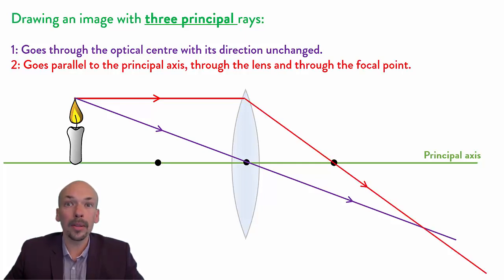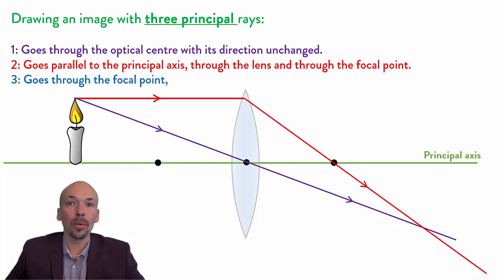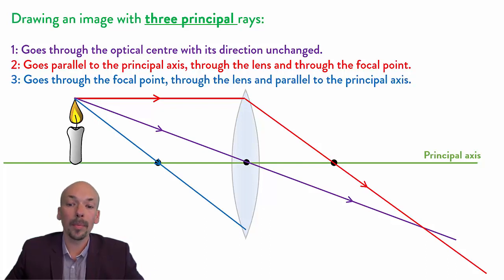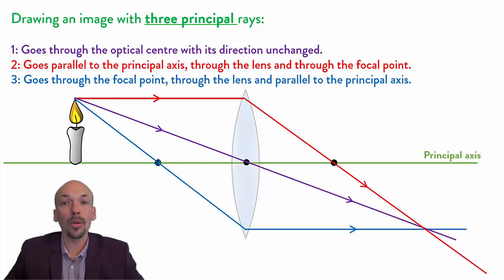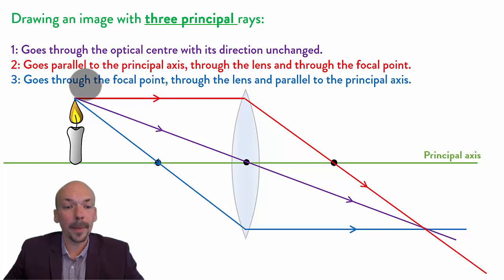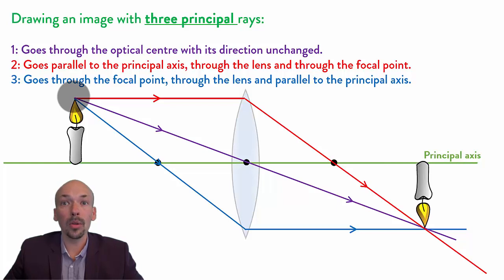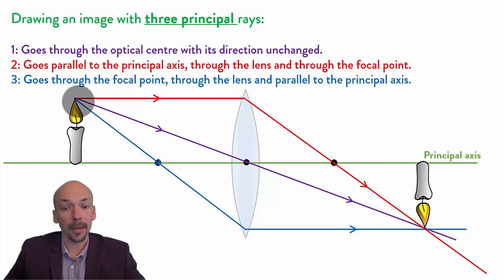As you can see the two will intersect. Now the third one — this one will go through the focal point, through the lens, and then parallel to the principal axis. As you can see, all three lines intersect at exactly the same point. So now we can draw the image, and as you can see the image is upside down, which is something that a converging lens does.